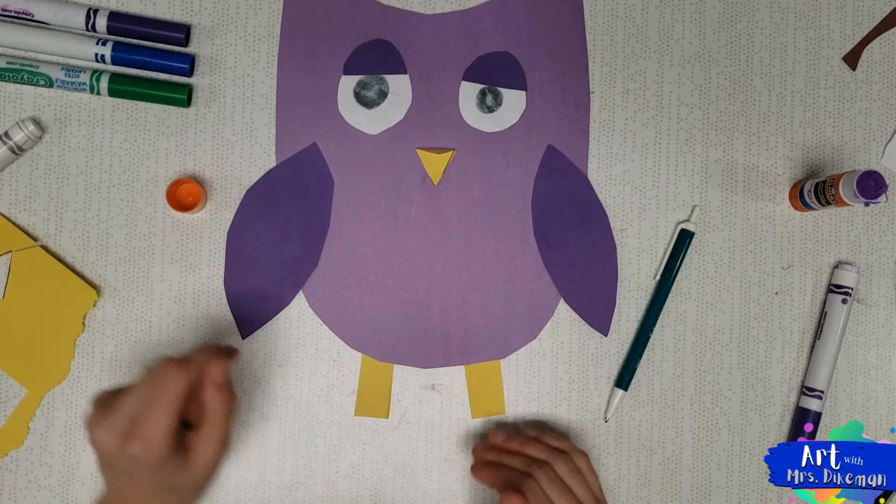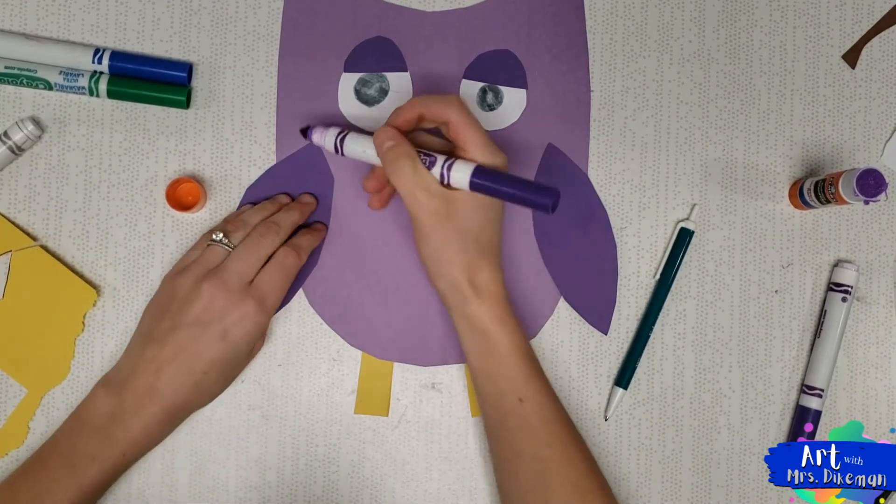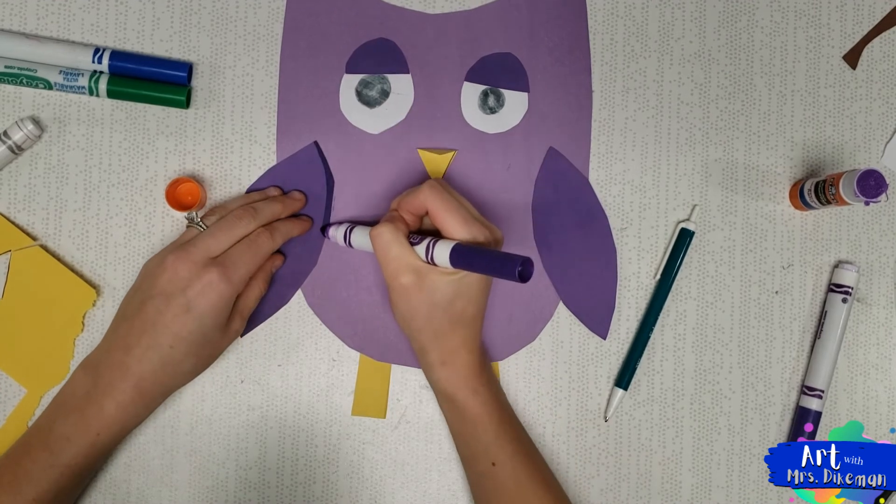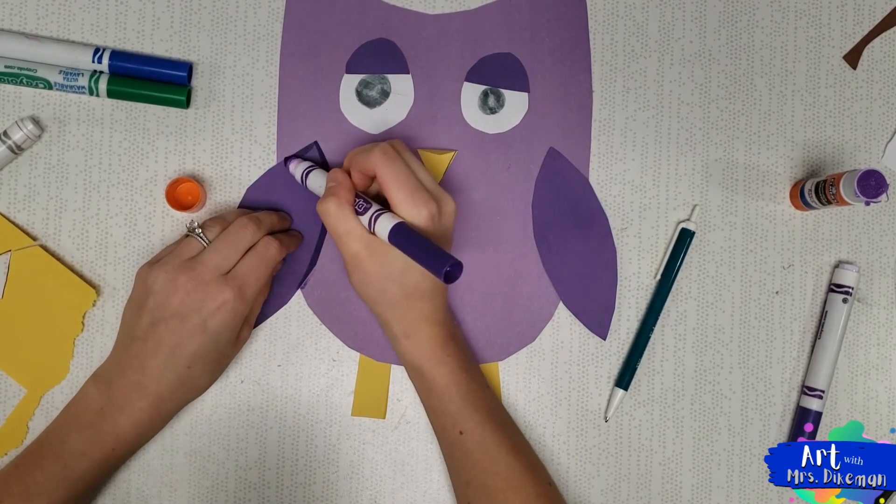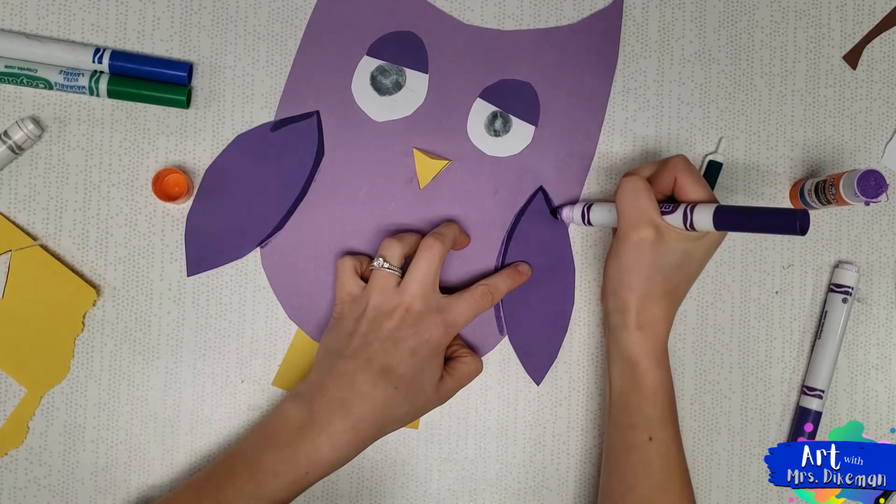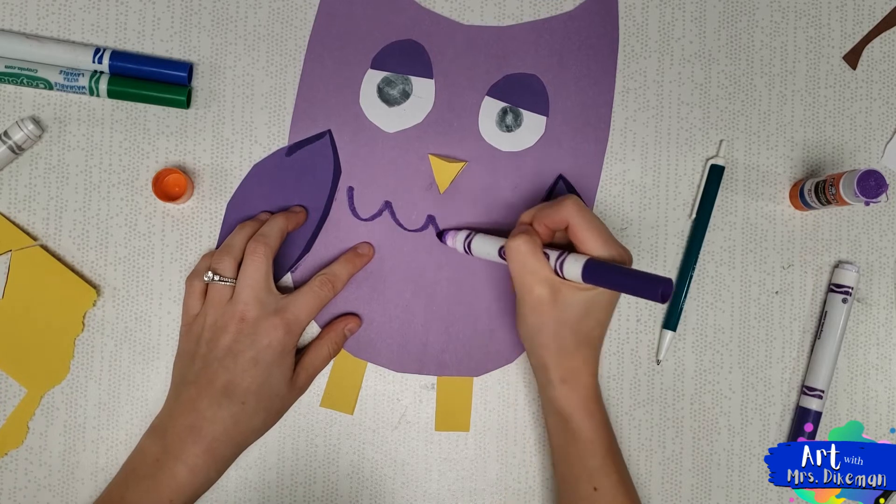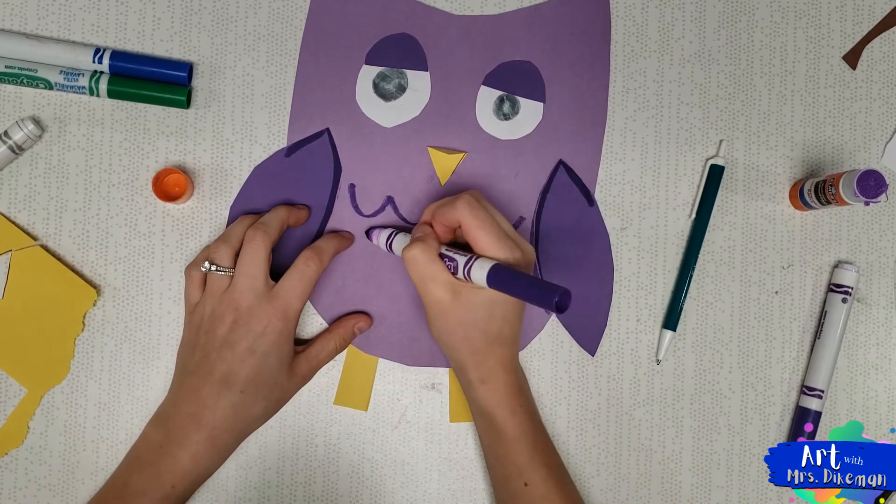Now the rest of the time, maybe you'd like to add decorations like we talked about. I'm going to outline his feathers and his arms. You could add feathers on his body using squiggly lines.